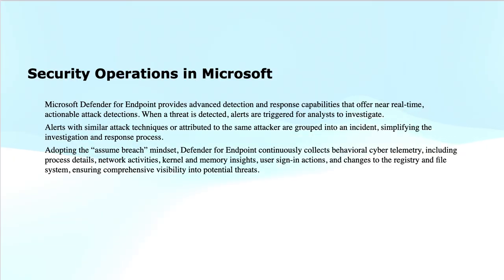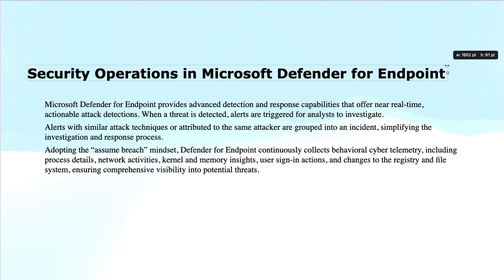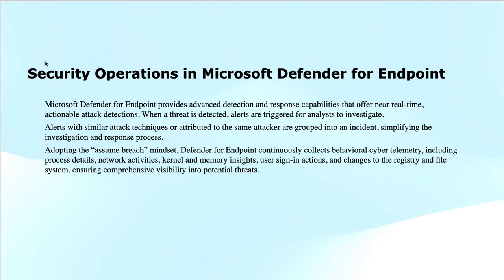Microsoft Defender for Endpoint provides advanced detection and response capabilities to identify and respond to attacks in near real time. When a threat is detected, alerts are generated and grouped into incidents, allowing analysts to investigate and respond more efficiently. It uses continuous behavioral telemetry — including processes, network, kernel, memory, and file system data — to detect and analyze threats based on an assumed breach mindset, ensuring comprehensive protection and rapid response.